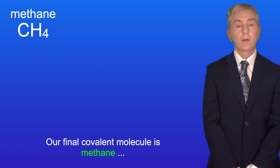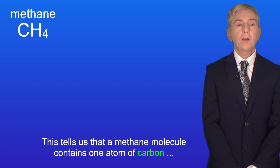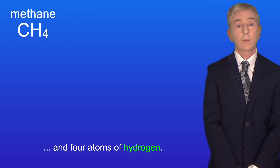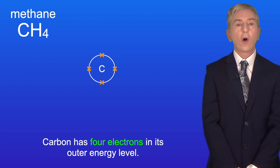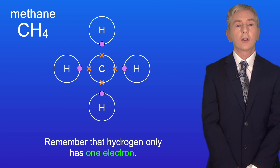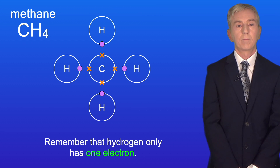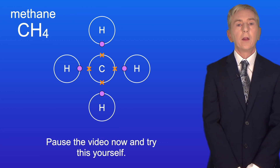Our final covalent molecule is methane, which has a formula CH₄. This tells us that a methane molecule contains one atom of carbon and four atoms of hydrogen. I'm showing you an atom of carbon here — carbon has four electrons in its outer energy level. Here are the four hydrogen atoms, and remember that hydrogen only has one electron. I'd like you to draw the covalent bonding in the methane molecule, so pause the video now and try this yourself.